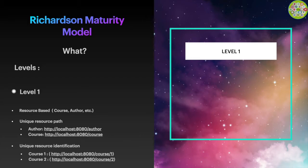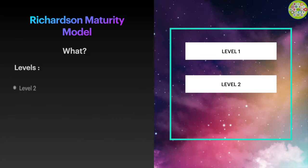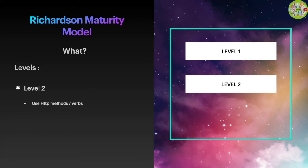Now you have the understanding of level 1, let's move to level 2. In level 2, if you add HTTP methods to level 1, then the API will be considered a level 2 API. This means a level 2 API has unique resource URIs and uses HTTP methods to perform any action on the data.